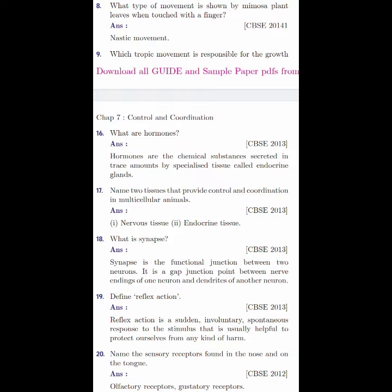What is synapse? Synapse is the functional junction between two neurons and it is a gap junction between the nerve ending of one neuron and dendrites of another neuron. That space or gap junction is said to be synapse. Define reflex action. Reflex action is a sudden involuntary spontaneous response to the stimulus that is usually helpful to protect ourselves from any kind of harm.